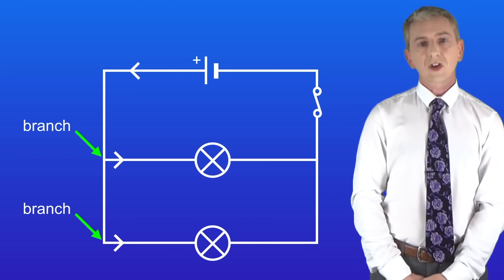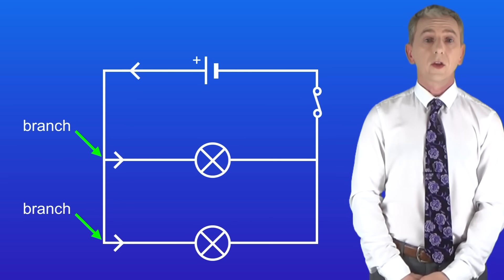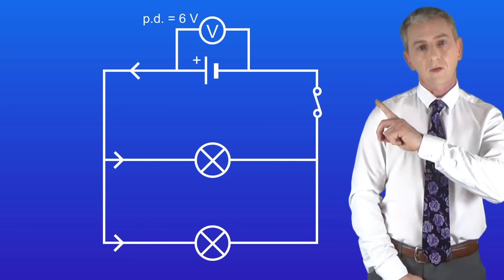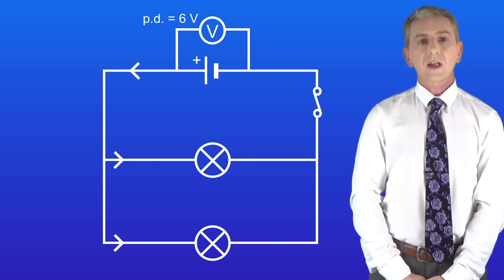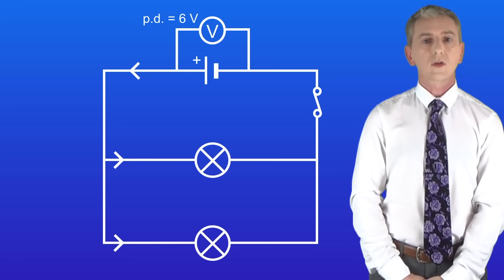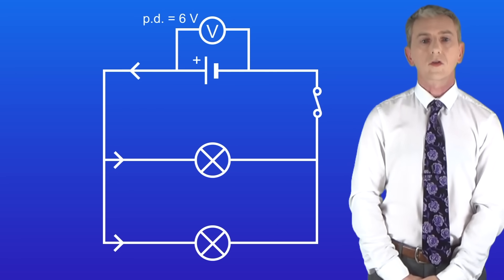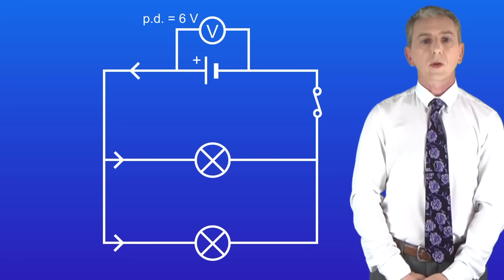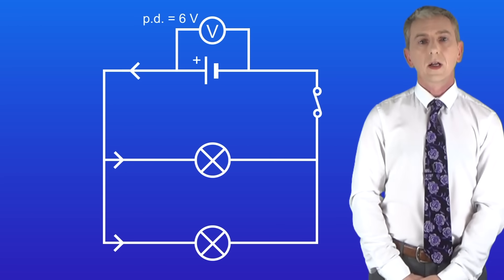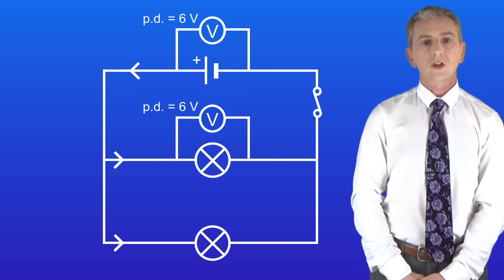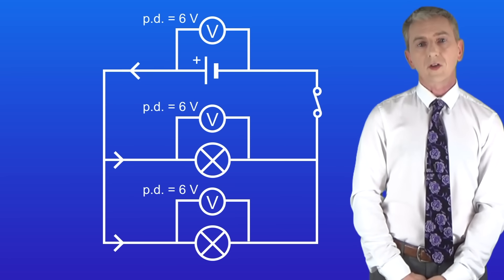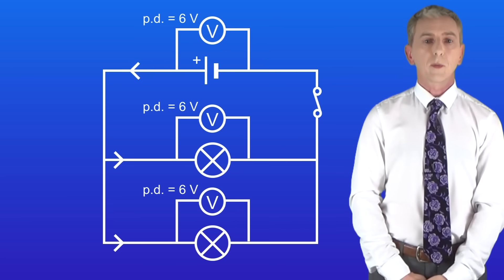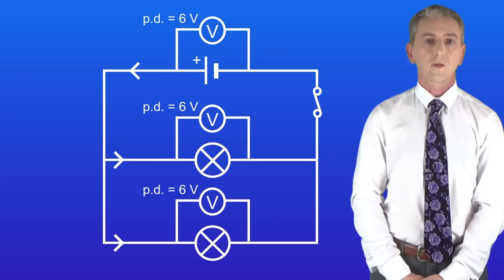We can measure the potential difference across this cell using a voltmeter. In this case the potential difference is six volts, which tells us that the current is carrying six joules of energy per coulomb of charge. We can now measure the potential difference across the branches. Using a voltmeter on the top branch tells us that the potential difference across the top lamp is six volts, and using a voltmeter on the bottom branch tells us that the potential difference across the bottom lamp is also six volts.